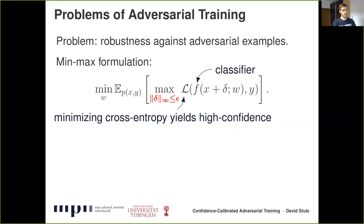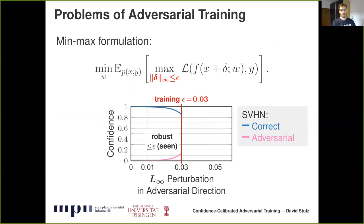Training on adversarial examples can usually be formulated as a min-max problem. The outer minimization problem learns the weights, and the inner maximization problem computes adversarial examples. Here, as highlighted in red, we consider L-infinity adversarial examples. Overall, adversarial training tries to minimize the cross-entropy on these examples, meaning we want high-confidence predictions on adversarial examples. As can be seen, the model learns to predict the correct class in blue with very high confidence within the L-infinity ball — highlighted in red, epsilon 0.03 on SVHN — visualized by plotting the confidence along a specific direction in input space.